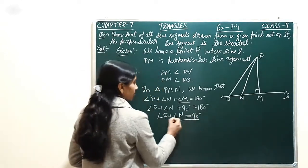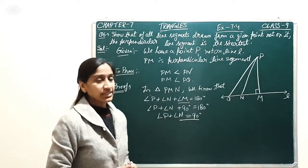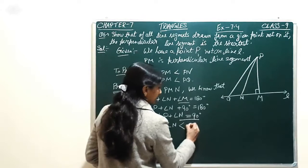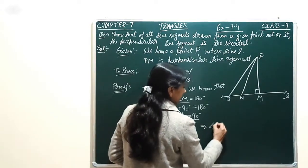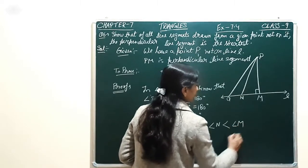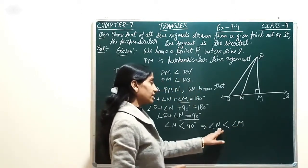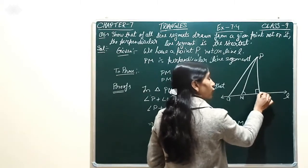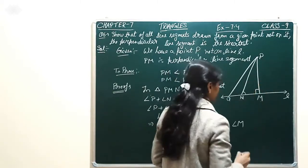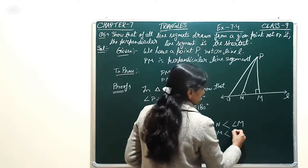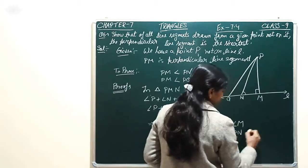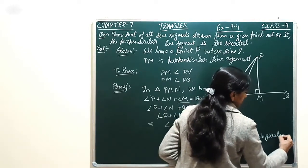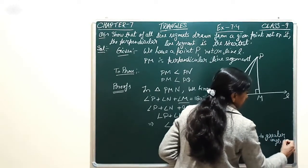That means the values of angle P and angle N are less than 90 degrees — both are acute angles. So it implies angle N is less than 90 degrees, and angle N is less than angle M, because angle M equals 90 degrees. Now, the side opposite to angle N is PM, and the side opposite to angle M is PN. Since angle N is less than angle M, it implies PM is less than PN, because the side opposite to the greater angle is the largest.